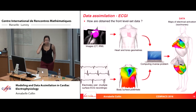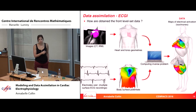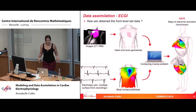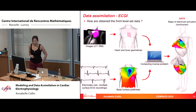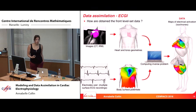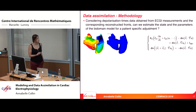How do we obtain the front level set data? You have CT or MRI images from which you build the heart and torso geometries. You also have an electrode vest that records multiple surface potentials on the torso, allowing you to build a body surface potential map. With the geometry and body surface potentials, you can solve an inverse problem to find the map of electrical activation. I will assume this inverse problem has already been solved and that I have the depolarization map for the atria and ventricle.